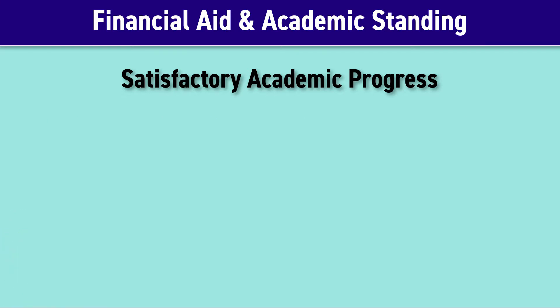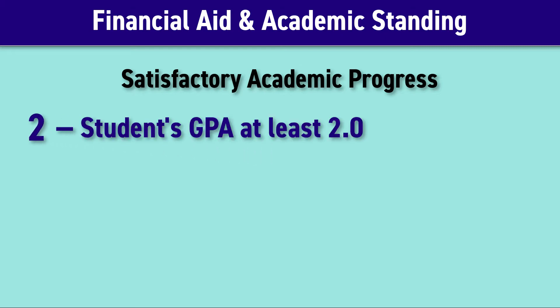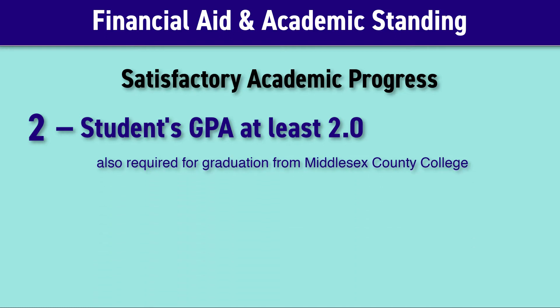The second factor in determining satisfactory academic progress is that a student's GPA is at least 2.0. This is also required for graduation from Middlesex County College, so it should be easy to remember.